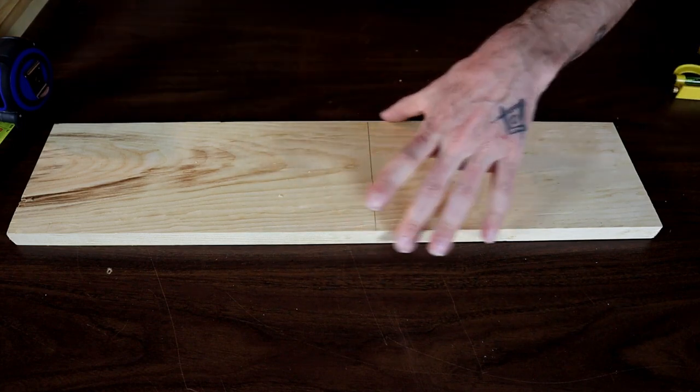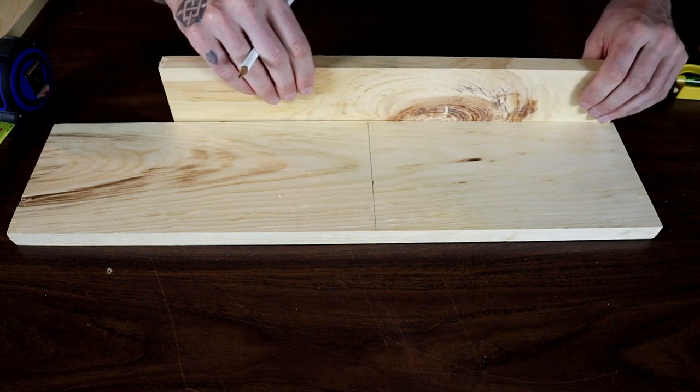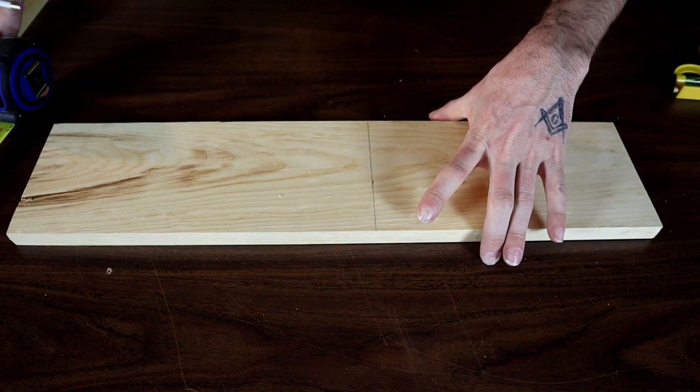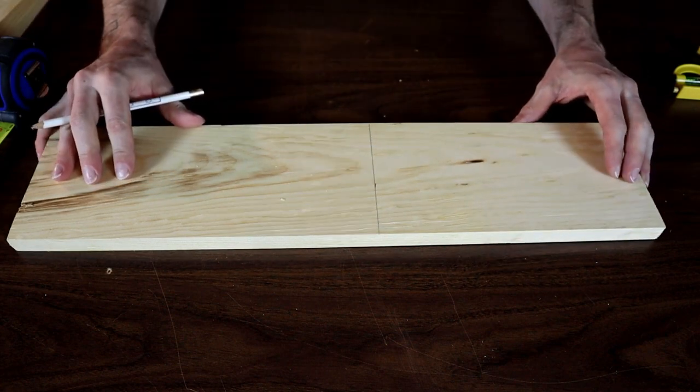This is going to be the bottom, so the sides are going to go on like this. The overall width is going to end up being five and a half plus an inch and a half. We'll go ahead and cut that out now.